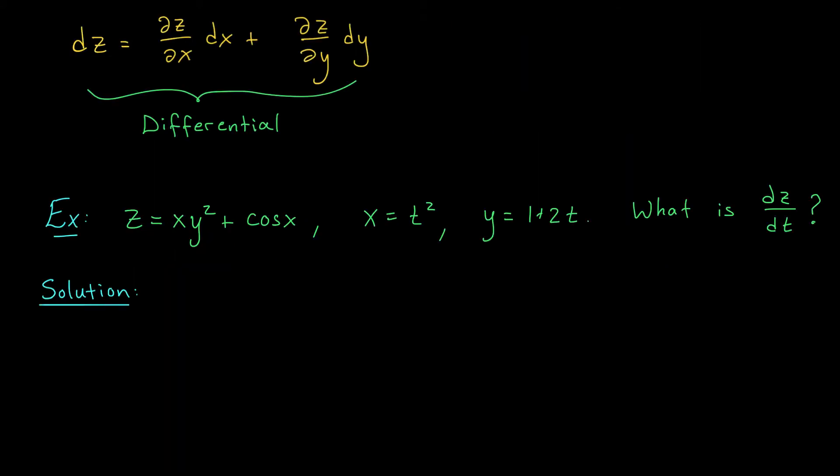To see a classier way of solving for dz over dt, consider this expression that we get from our differentials. See, I told you they'd be back. Our expression says that dz is the partial derivative with respect to x times dx plus the partial derivative with respect to y times dy.